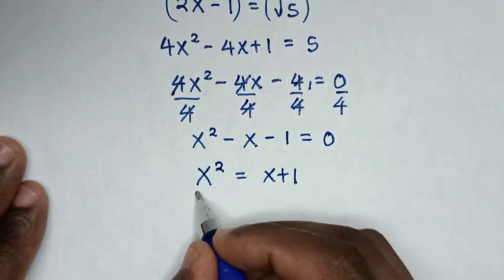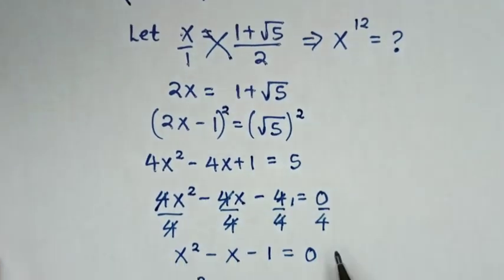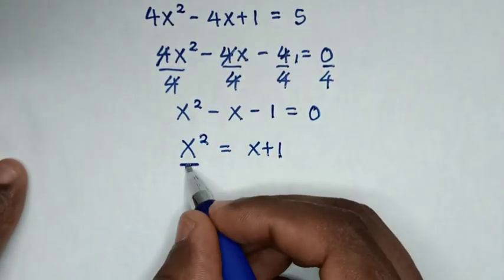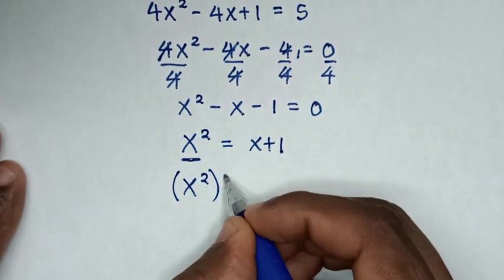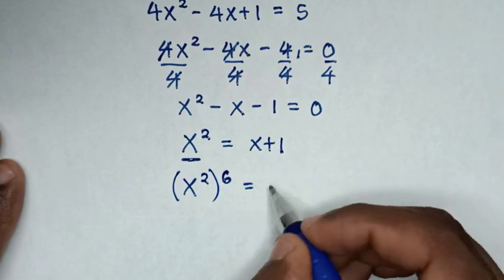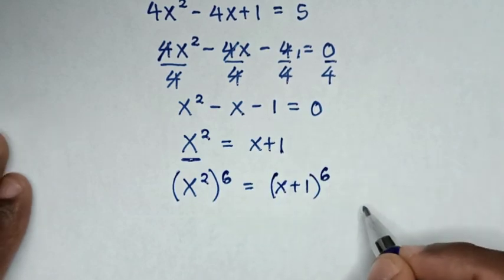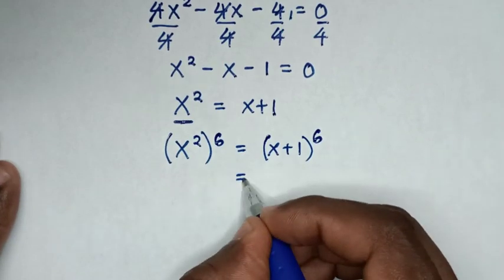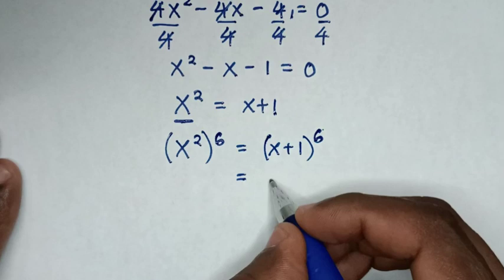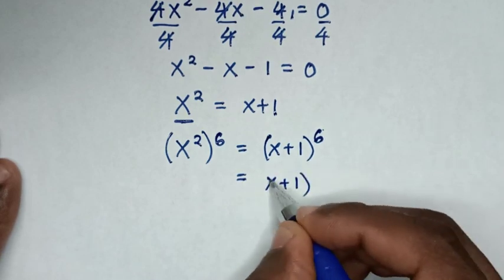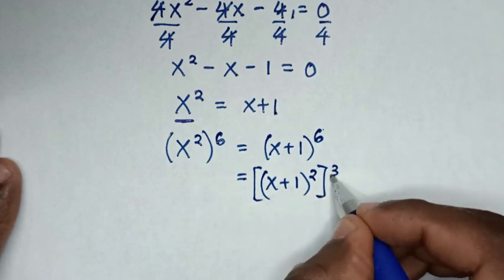Now from here x is squared, but we have to find the value of x to the power of 12, so we'll raise this by 6: x squared bracket to the power of 6 is equal to (x plus 1) bracket to the power of 6. Then, since power of 6 is the same as power of 2 times power of 3, it will be (x plus 1) squared, then bracket to the power of 3.